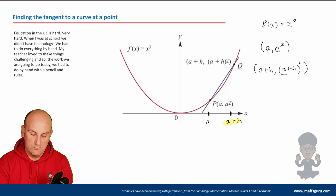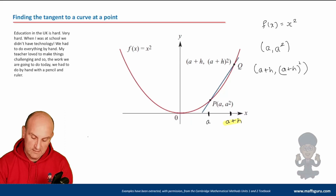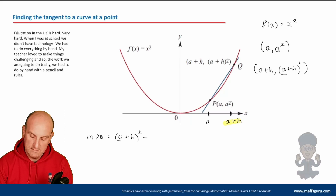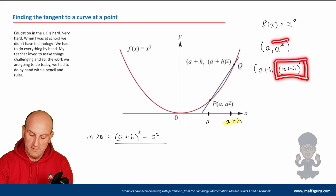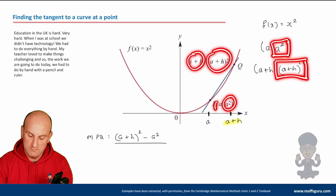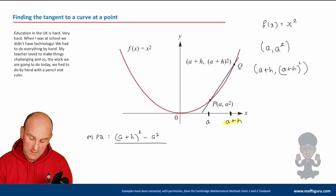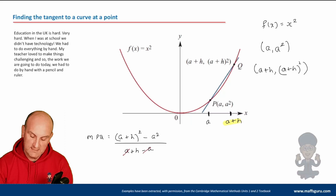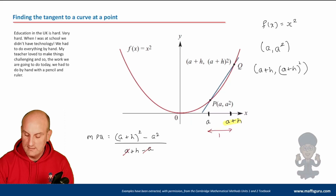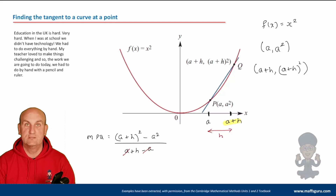We've got two coordinates, so we do Y₂ minus Y₁ divided by X₂ minus X₁. The gradient M of the secant PQ is equal to (A + H)² minus A², all divided by (A + H) minus A. The A and minus A cancel, leaving H on the bottom. That makes sense because we've gone from A to A + H, so the horizontal distance is just H.